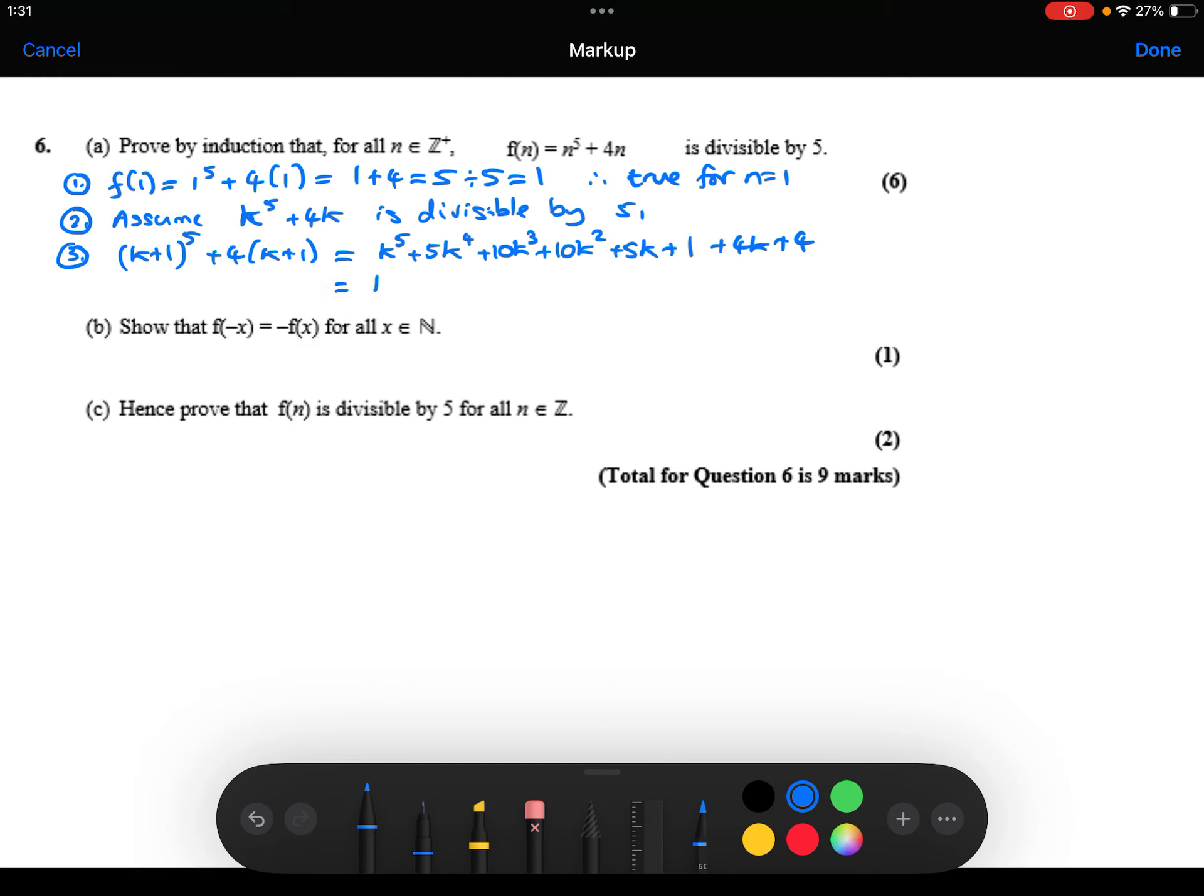Collecting up those like terms. In fact, no, I'm not going to collect up those like terms. What I'm going to do is I'm going to just reorder this slightly. So I'm going to write the k to the power 5 plus the 4k at the front. And then I'm going to write all of these other terms afterwards. And notice I've got the 1 and the 4 as well, that I will collect those together to get a 5.